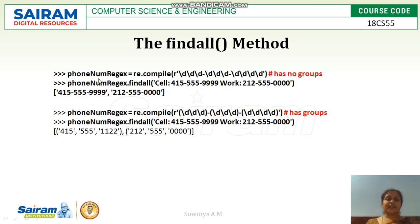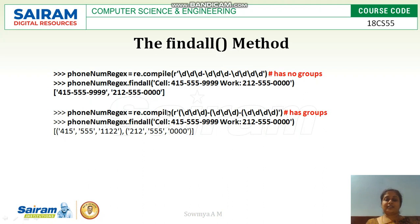Here is an example where we have re.compile with a phone number regular expression but no groups. Using findall with a string that contains a cell number and a work number — two phone numbers — if we had used search, only the first match would be returned. With findall, the compiled object searches the entire string for all occurrences of the pattern. findall also works with grouped regular expressions, returning multiple occurrences with groups.